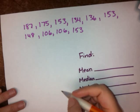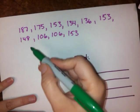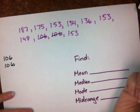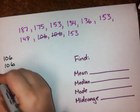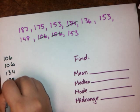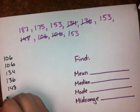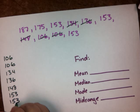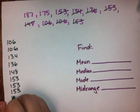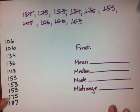I'm going to put them in order from lowest to highest. It looks like 106 is my lowest, and I have two 106s. The next lowest looks like 134, then 136, and then I have a 148. I have three 153s — I need to make sure I put all of them. And then I have a 175 and a 187. So here I've put my numbers in order from least to greatest, and that's going to help me calculate these things.